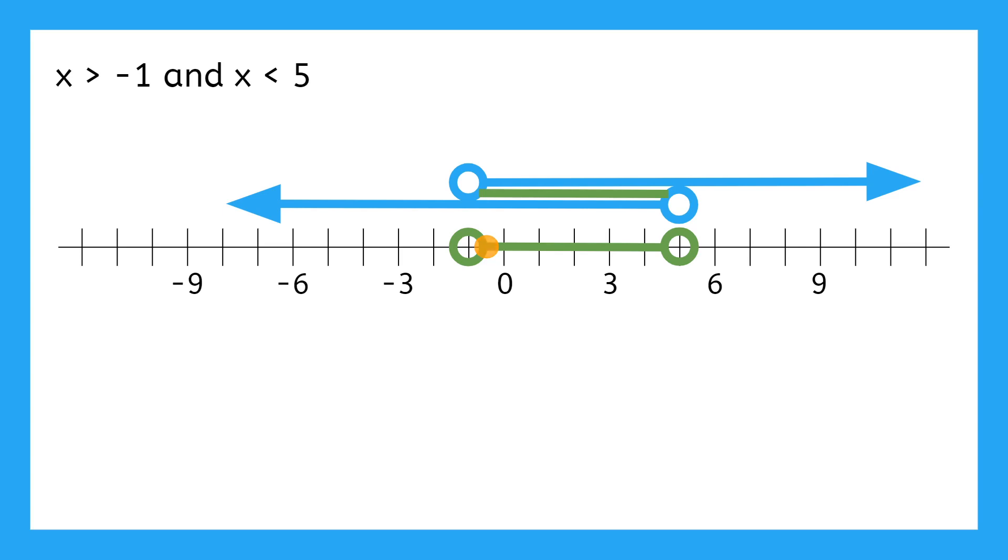Finally, we can write AND compound inequalities a little shorter. Since the answer is anything between negative 1 and 5, we can write x is between negative 1 and 5. Technically, it says -1 < x < 5, but it means the same thing. x is both greater than negative 1 and less than 5. When we write it like this, we have to be sure to put it in the order of lowest to highest, with the inequality symbols always being less than or less than or equal to.